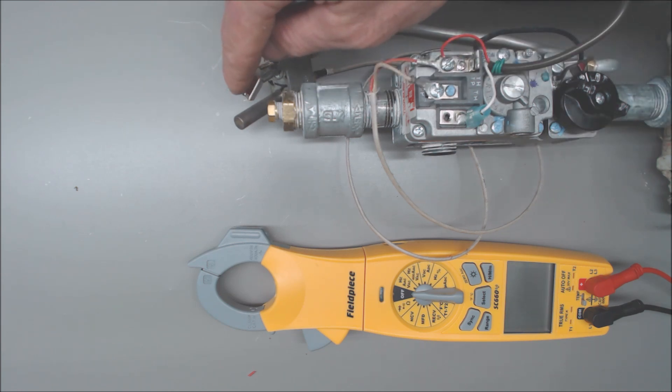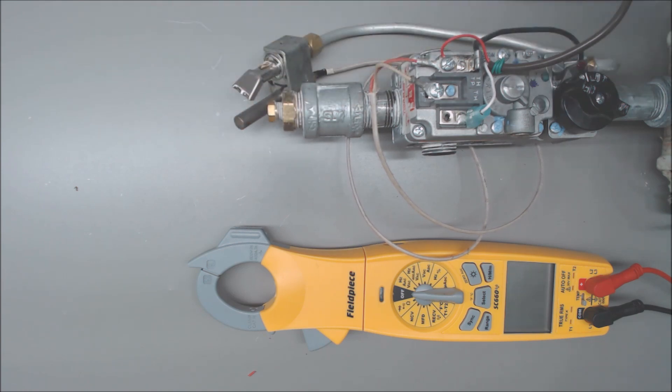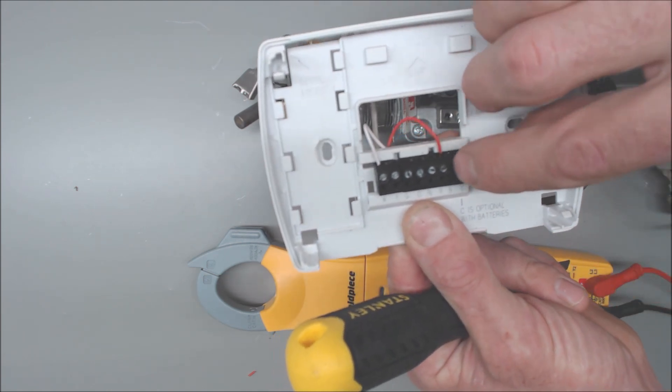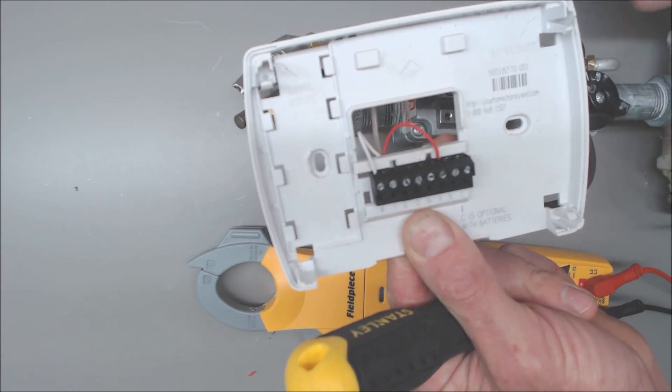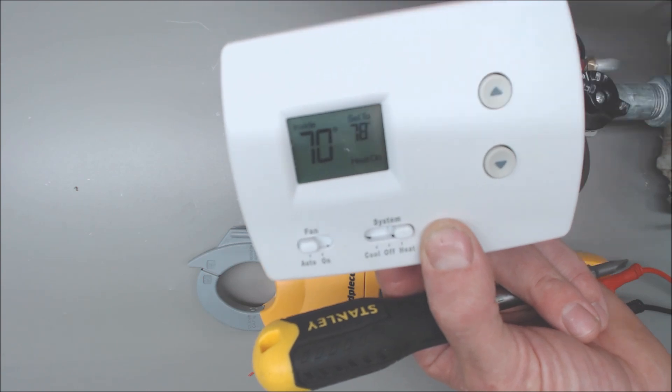Once you have your main flame and you allow about a minute for your thermopile to heat up, if you go ahead and turn your thermostat to heat by basically jumping your R to your W inside your thermostat face, you can turn it to heat and turn your temperature up.